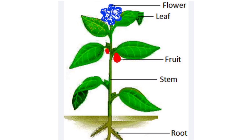Here is the figure of a plant. The 5 important parts of a plant are: flower, leaf, fruit, stem, and also root.